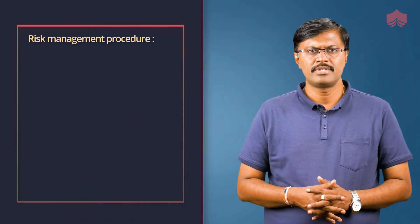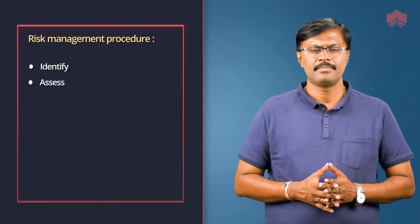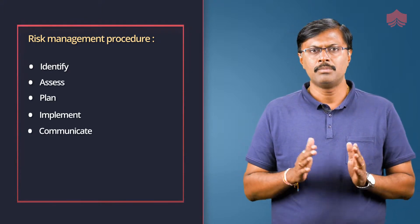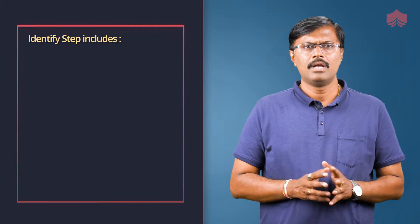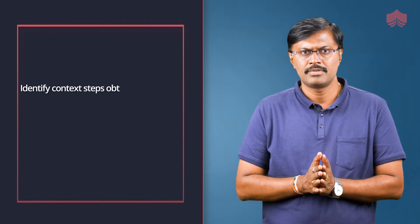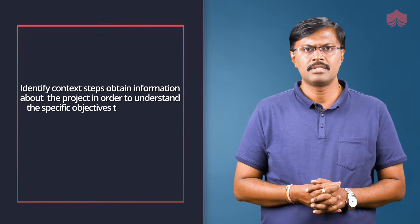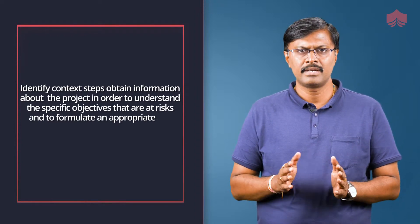The risk management procedure includes: identify, assess, plan, implement and communicate. PRINCE2 recommends but does not mandate a risk management procedure based on management of risk guidance for practitioners from the Office of Government Commerce, 2010. The identify step includes identifying context and identifying risks. The identify context step obtains information about the project in order to understand the specific objectives that are at risk and to formulate an appropriate risk management approach.